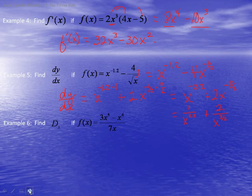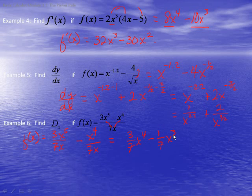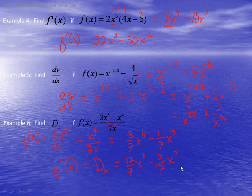In the last example, we are going to find d/dx. Like in Example 4 where I multiplied out, here I am going to divide to separate the terms. So f(x) equals 3x⁵/(7x) - x⁴/(7x), which simplifies to (3/7)x⁴ - (1/7)x³. Now I can take the derivative: 4 times (3/7) gives 12/7, so the result is (12/7)x³ - (3/7)x², and we are done.